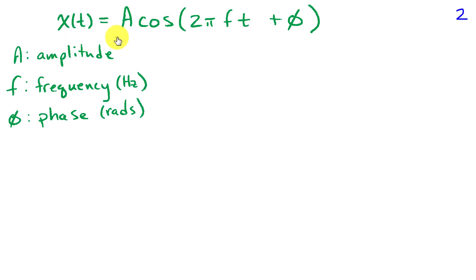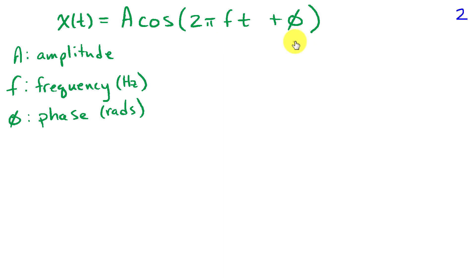Here we have our sinusoid with amplitude A, frequency F in units of hertz (1 over seconds), and phase phi in units of radians.